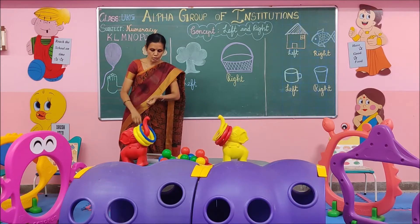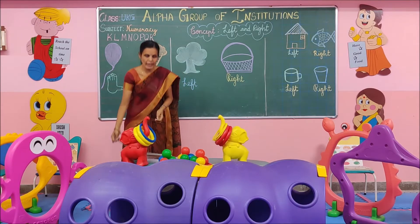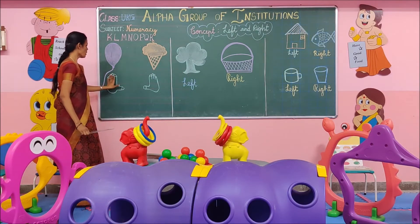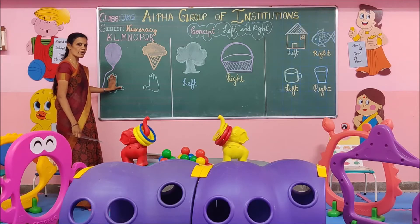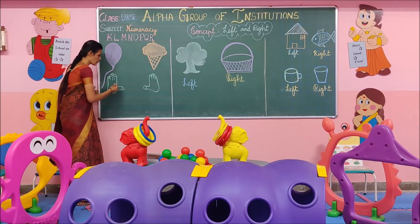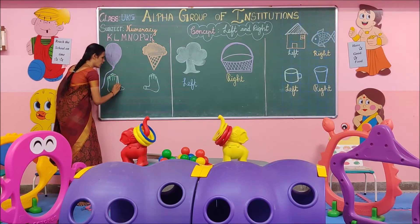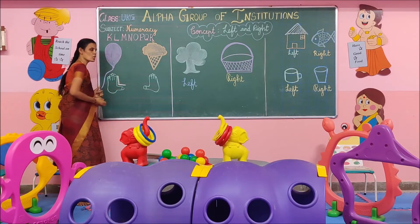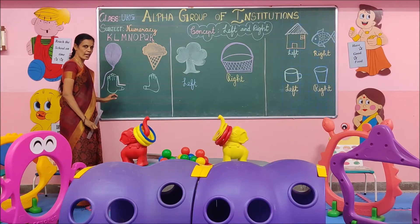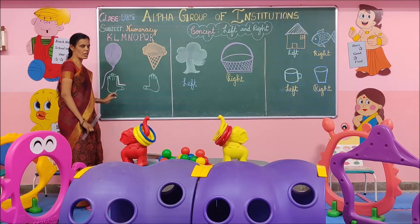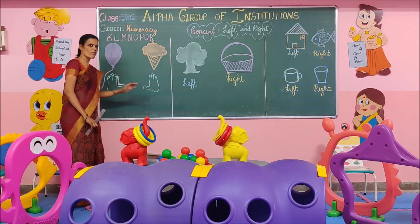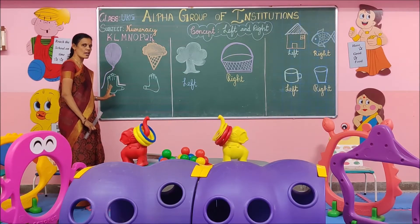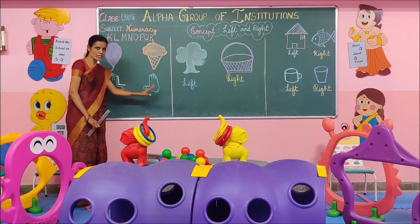Now we will move on to the board to identify left and right. This is the form — which form shows the capital letter L? Capital letter L means left. The hand that shows capital letter L is your left hand. The other hand is right.